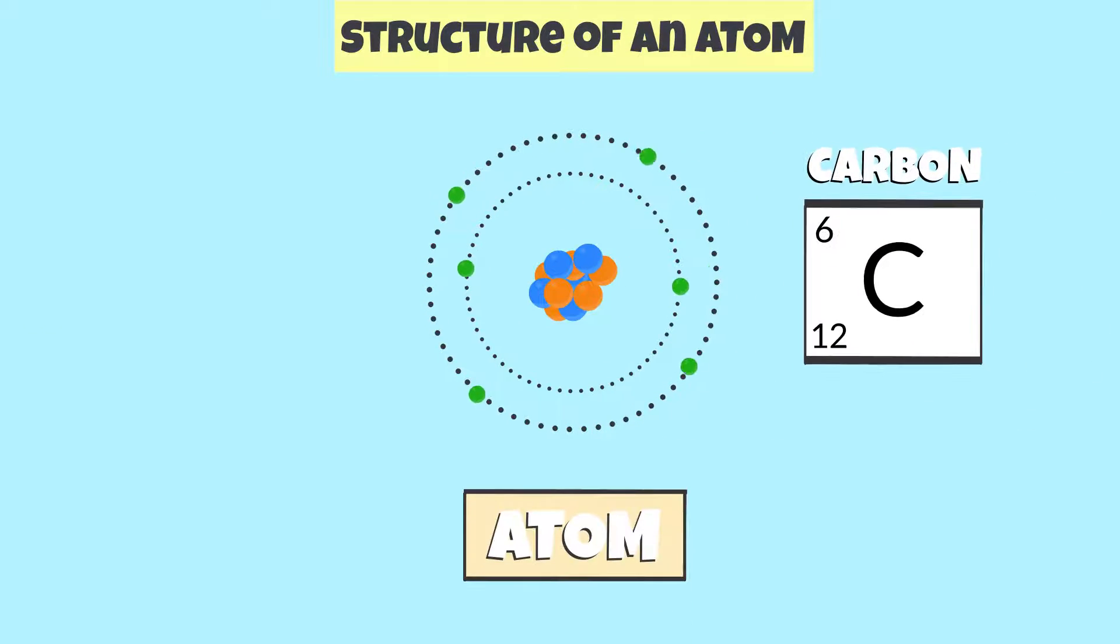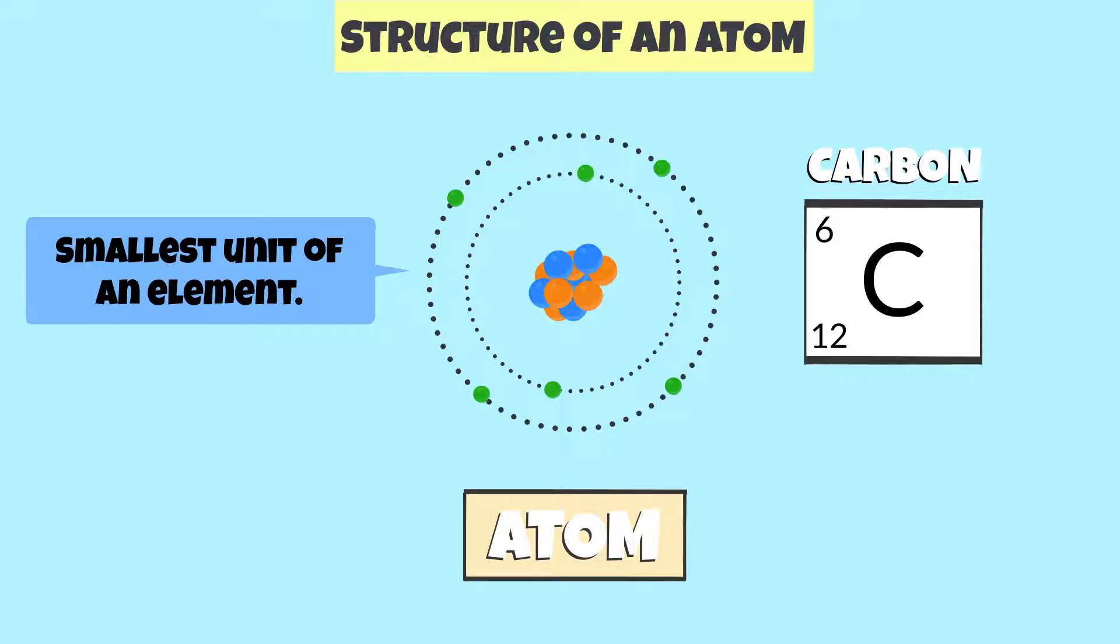Normally, scientists don't divide atoms into smaller particles, so that's why we refer to an atom as the smallest unit of an element.